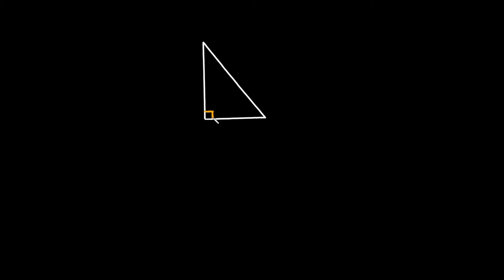Whenever you see this little square right here, that means 90 degrees. You could literally just write 90 degrees if you wanted to, but this square and the 90 degrees mean the same thing.